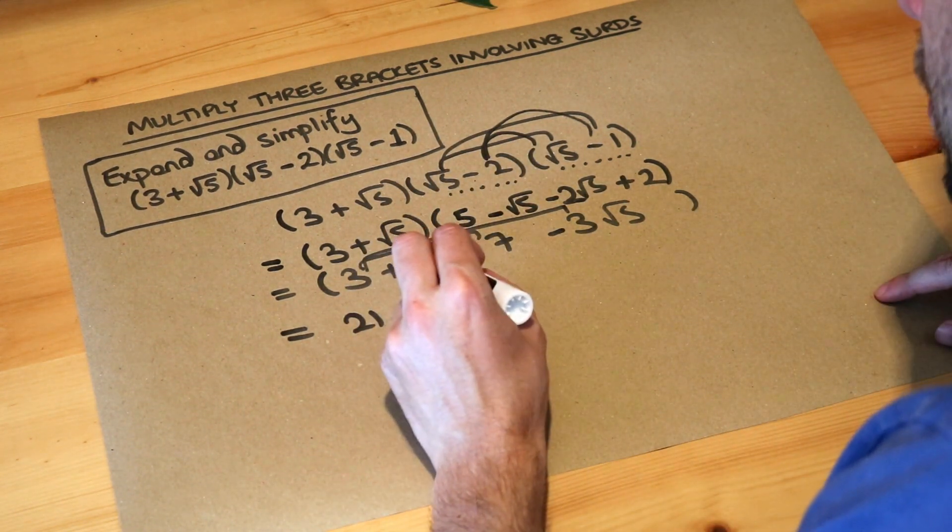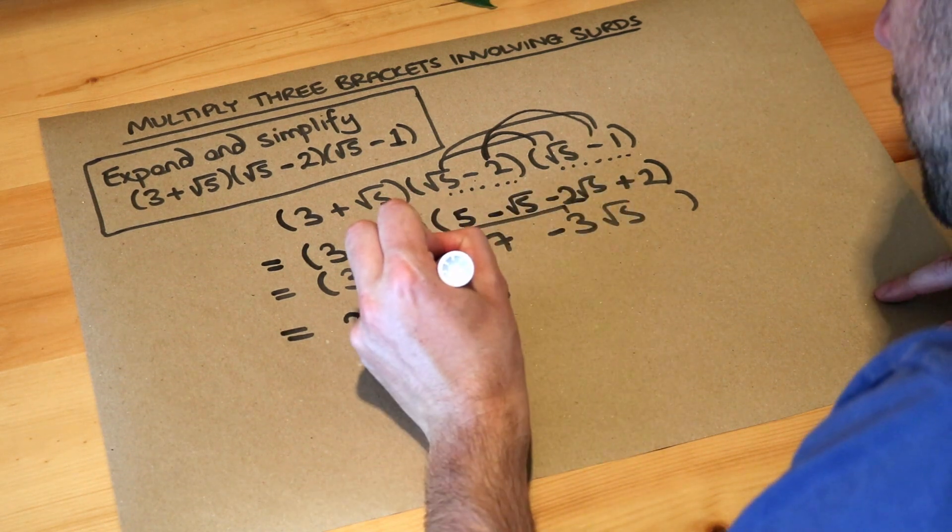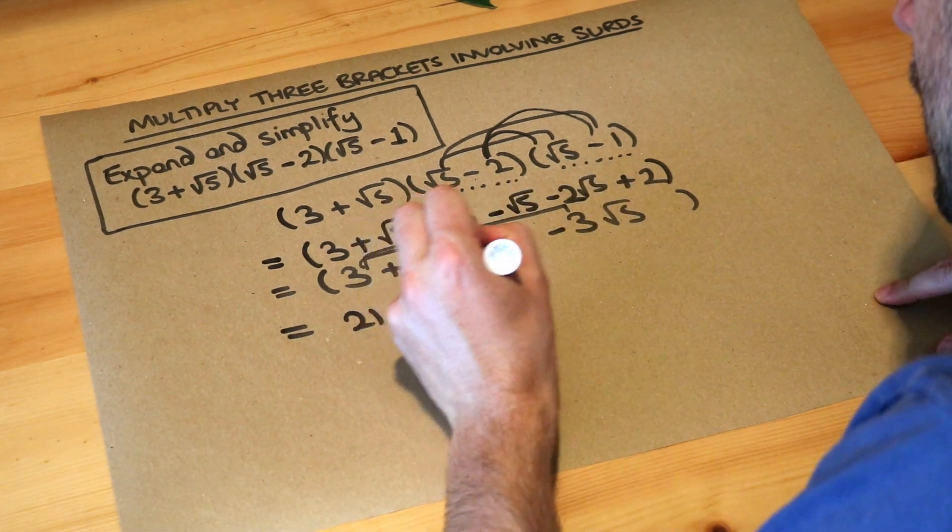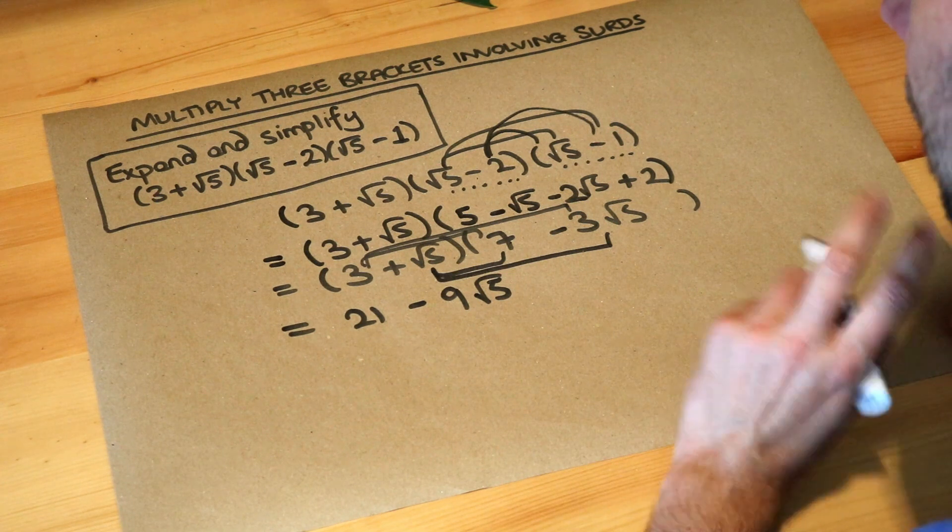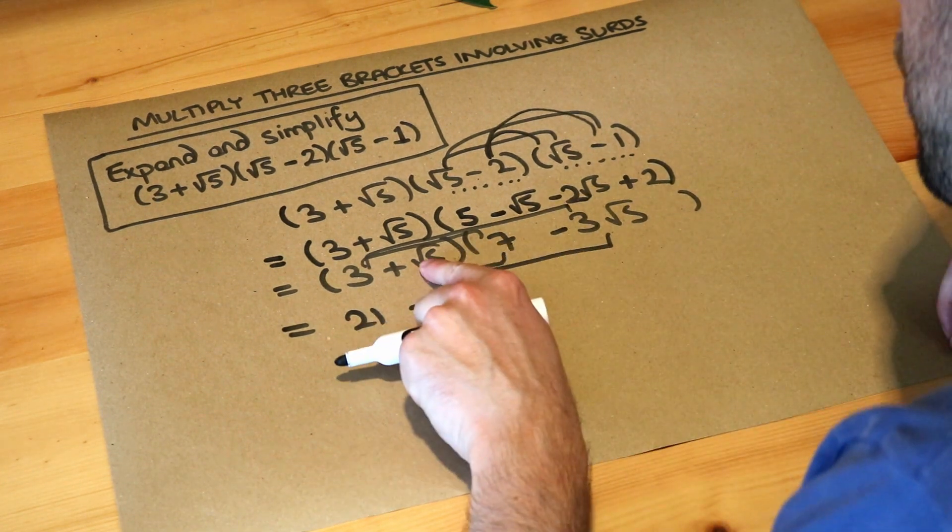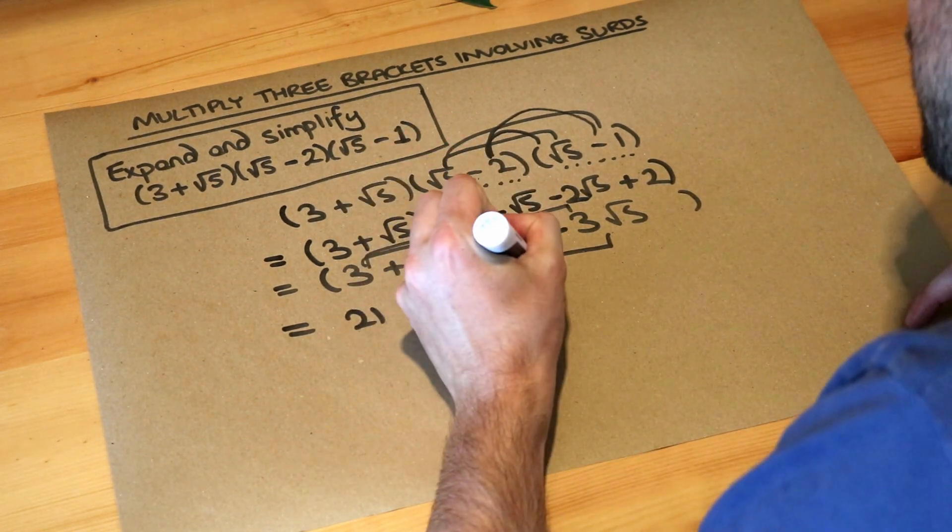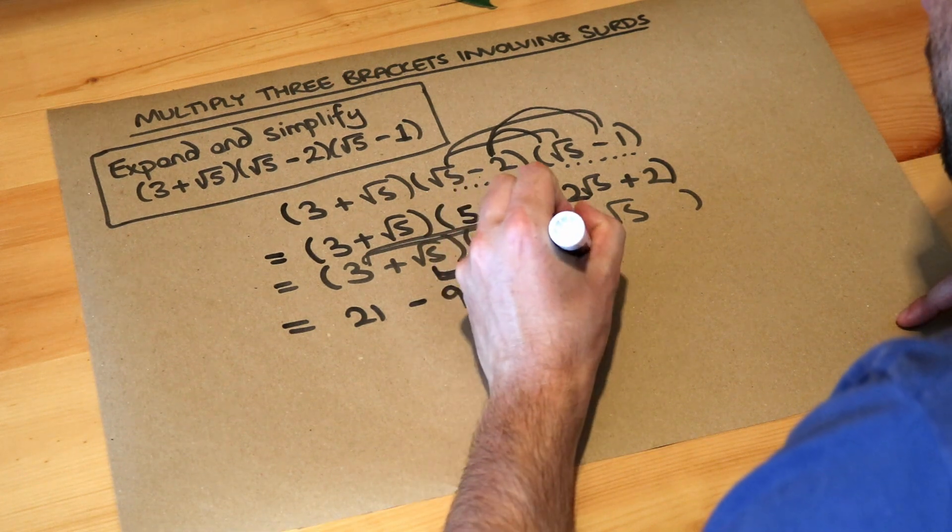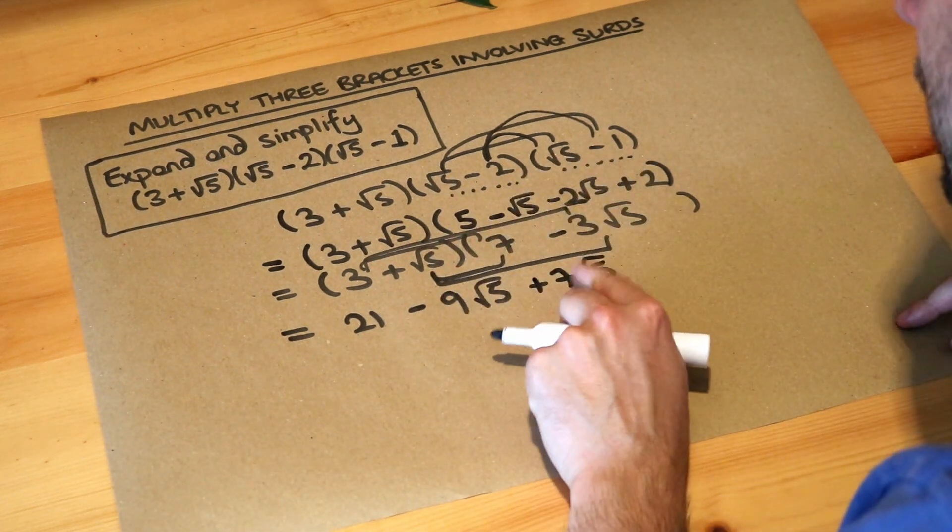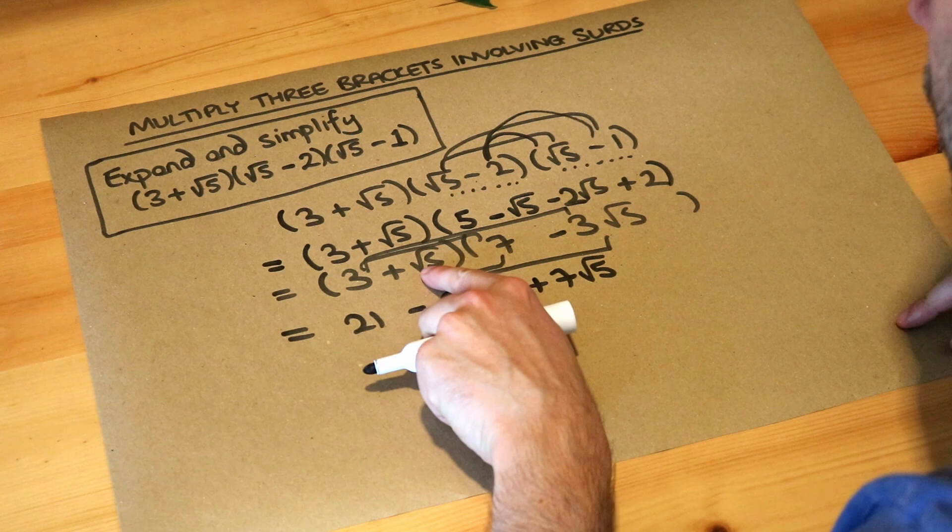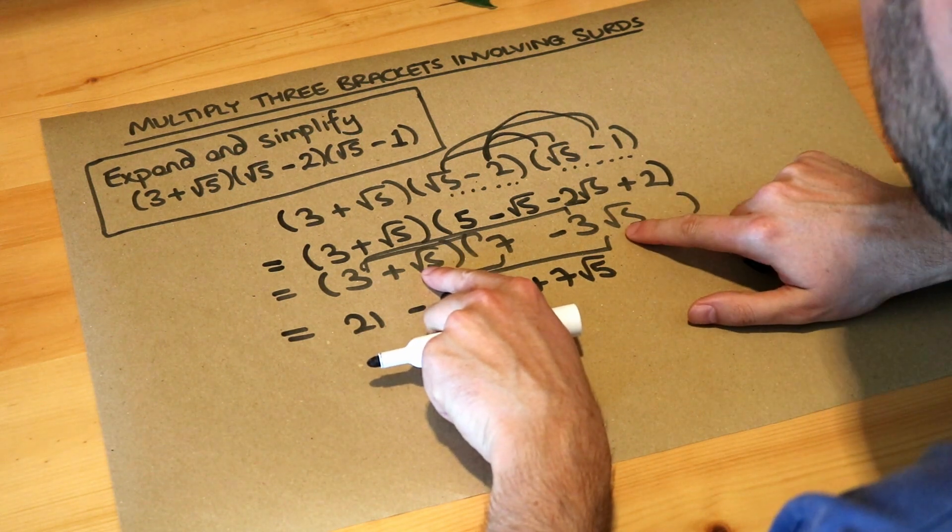Now we do √5 multiplied by each of the things in the second bracket. √5 times 7 is 7√5. The non-surd comes first. Then we do √5 times -3√5.